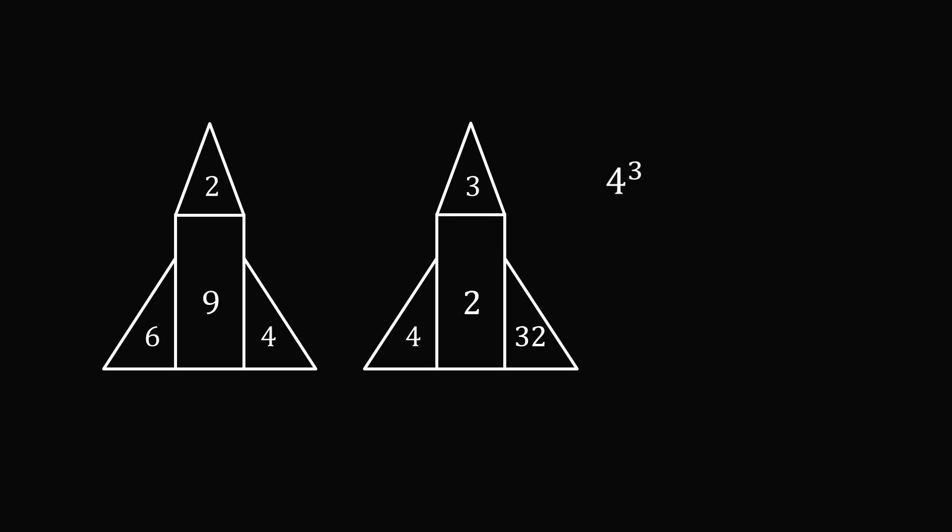So we have 4 to the power of 3. 4 times 4 is equal to 16, multiplied by 4 again, gives us 64. Now we take the other two numbers and take their product. So we have 2 multiplied by 32, and this again is equal to 64. So it looks like we have found the pattern.